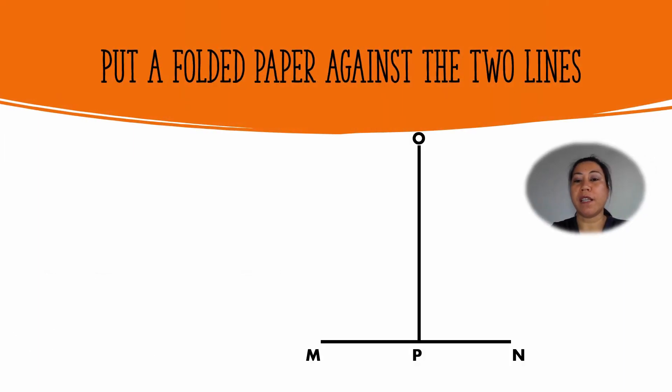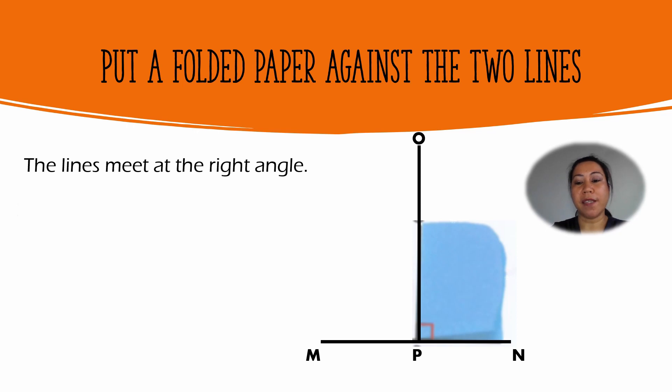Now put a folded paper against the two lines, line MN and line PO. The lines meet at the right angle, so line OP is perpendicular to line MN. We write line OP is perpendicular to line MN.